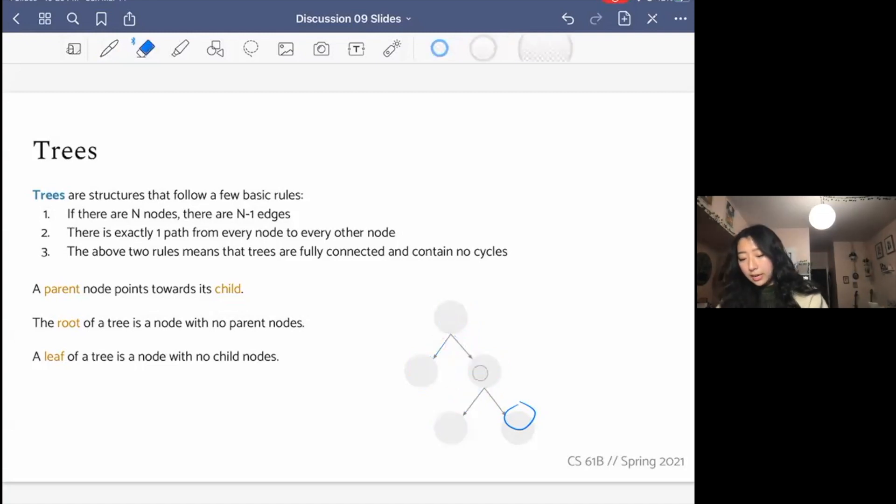There's exactly one path from every node to every other node. So what this means is if I want to get from node A to node B, there's only one way to get there, traversing those edges. If there was a cycle, for example, this would not be a tree, or in other words, if there was another way to get from A to B, this would not be a tree.